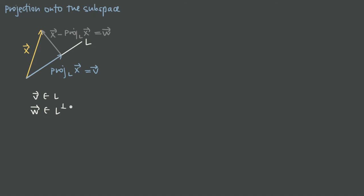We also want to realize that we can do this not just for lines like L. We can project a vector onto a subspace that's something other than just a one-dimensional line. For example, we might imagine three-dimensional space, and instead of a line L, maybe we have a plane. We have some vector x and we want to project it onto the plane.